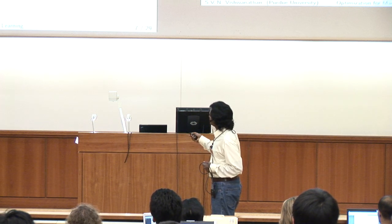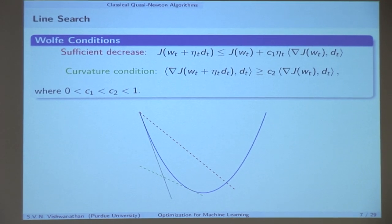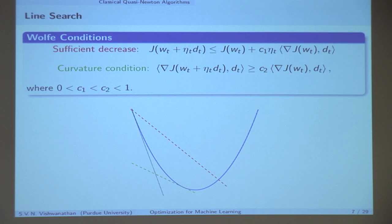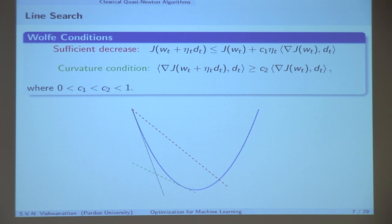The Wolfe condition says: take this first-order Taylor approximation to your function and pump it up a little bit. The point where it intersects the function gives you an upper bound on the step size — do not step too far away. The other condition says: you spent a lot of time finding this direction, so do not take too small a step. They evaluate a first-order Taylor approximation and ensure the slope is at least some value. The sufficient decrease condition prevents too large a step; the curvature condition prevents too small a step.